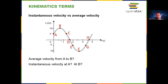So the displacement is the final position of 10 meters minus the initial of 5 meters, which is 5 meters. Then 5 divided by the time 0.75 seconds is 6.67 meters per second. That's the average velocity from A to B.